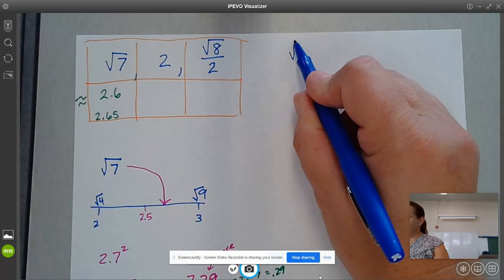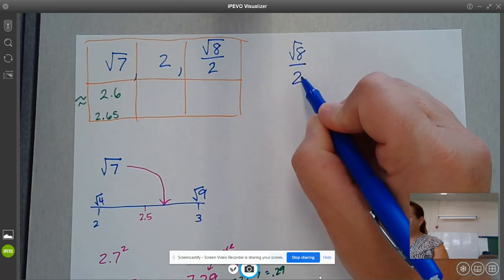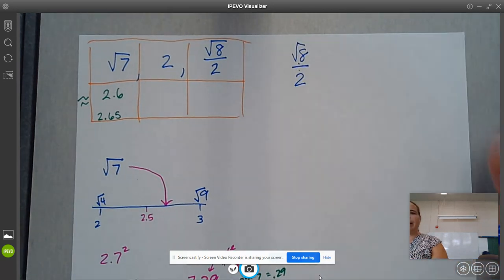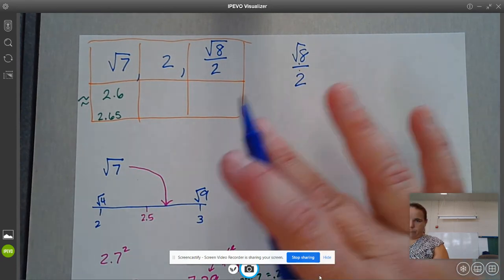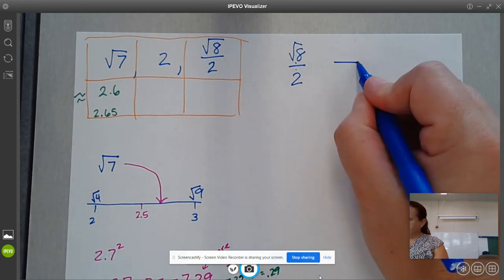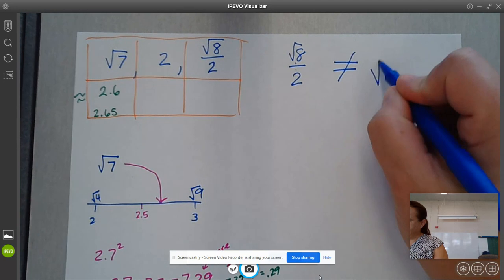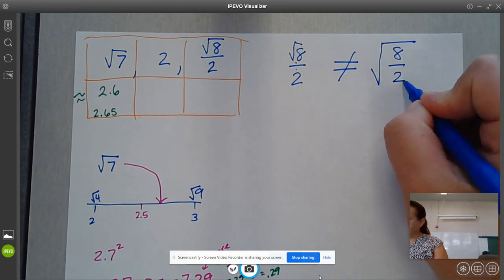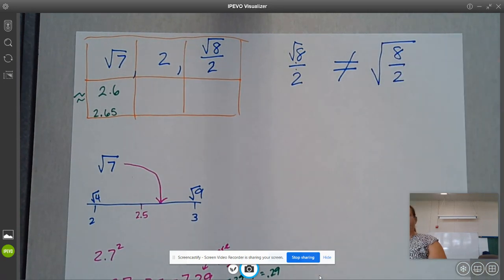So square root of 8 over 2, this is going to be divided by 2. We cannot divide right now. This is different, so pay attention. This is not the same as this. These two things are not the same.